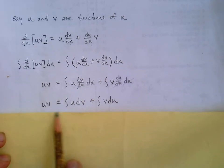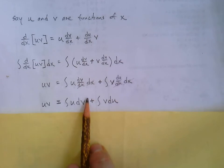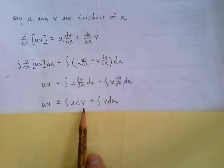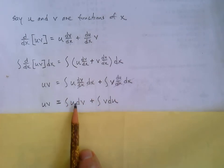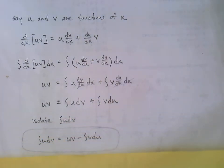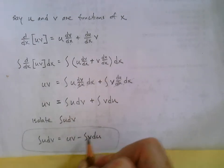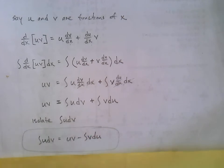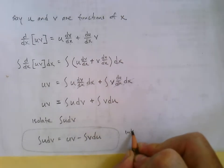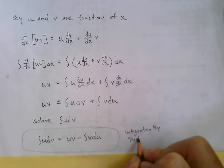Now we isolate the integral of u dv. This is an equation, so we subtract the integral of v du to the other side, giving us: integral of u dv = uv minus integral of v du. That is our integration by parts formula.